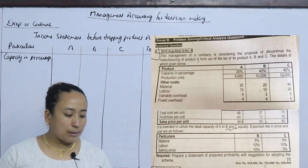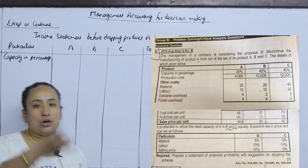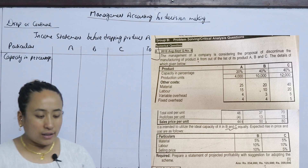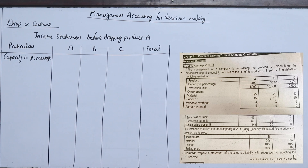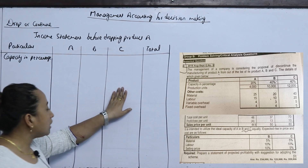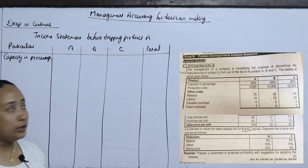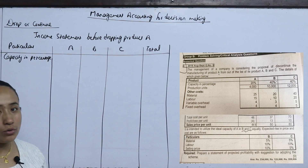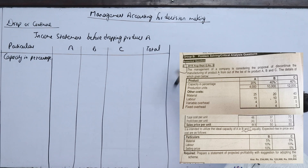This is the scheme. We will prepare a profitable income statement. We need to decide: dropping product A or not dropping product A. We will prepare an income statement before dropping product A, for products A, B, C and total. Then we will do a comparative income statement — drop A versus keep A — showing B, C, total, and the difference.